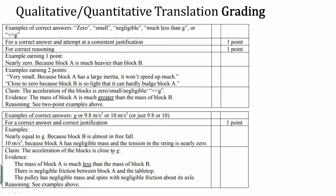Let's look at how it's graded. There are multiple ways this can be graded, and here are the point distributions. First, there is a point for a correct answer and an attempt at a consistent justification. The correct answer is that acceleration is either zero, small, negligible, much less than g, or uses the symbol much less than g. Another point is for the correct reasoning, with three different acceptable reasonings.